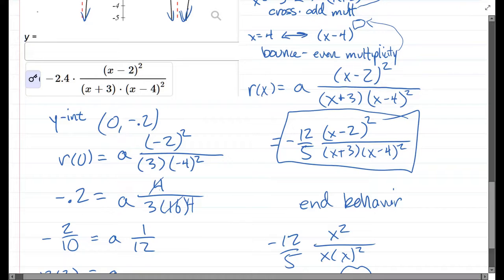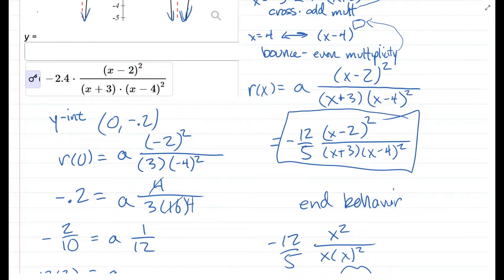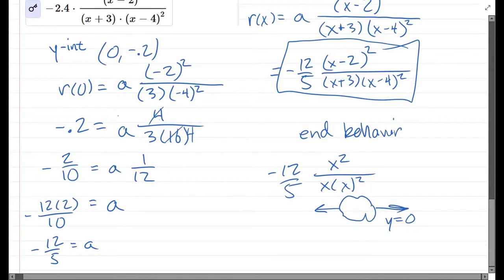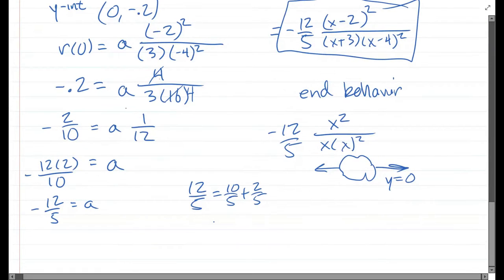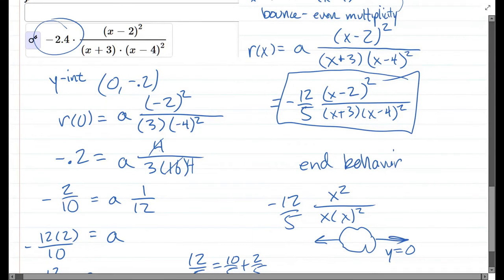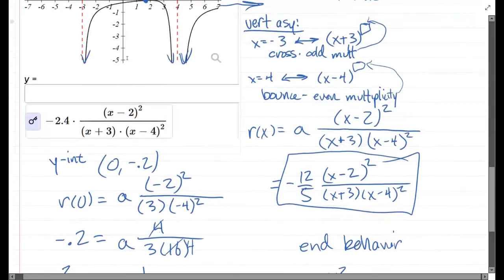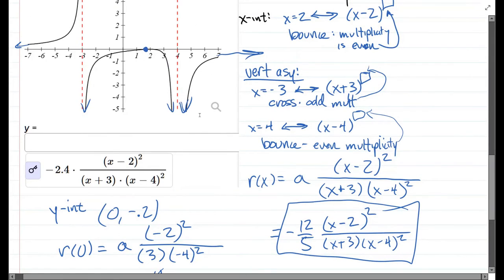Now our leading coefficient says negative two point four. Twelve fifths, if you turn it into a decimal, you could just divide it on a calculator. But we would get ten fifths plus two fifths. Ten fifths, I broke that out because it's two. Two fifths is four tenths or two point four. So that is the right number in the front and it should be negative as we got. Okay, so I hope this helped you turn a graph into a rational function.